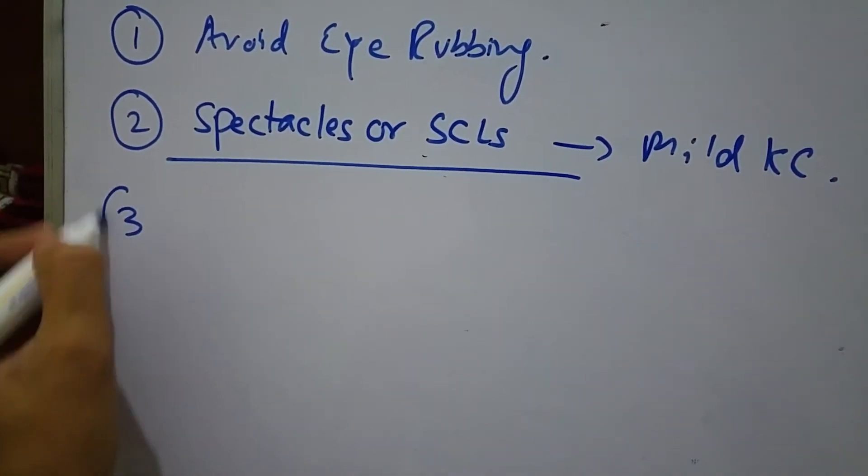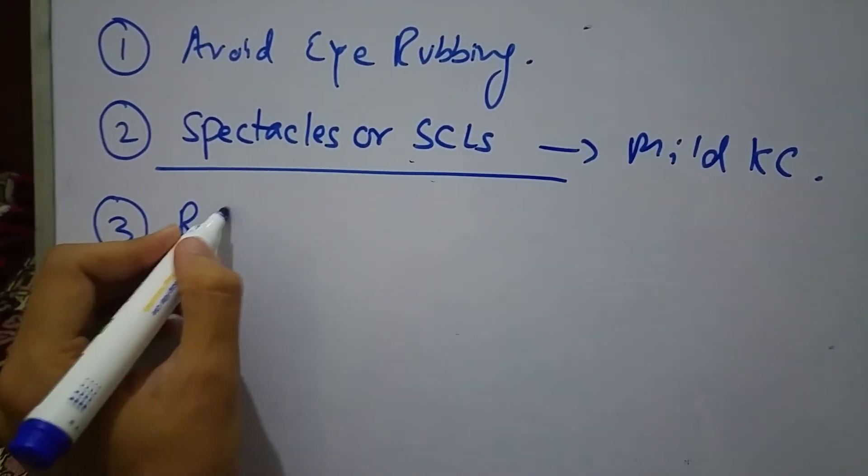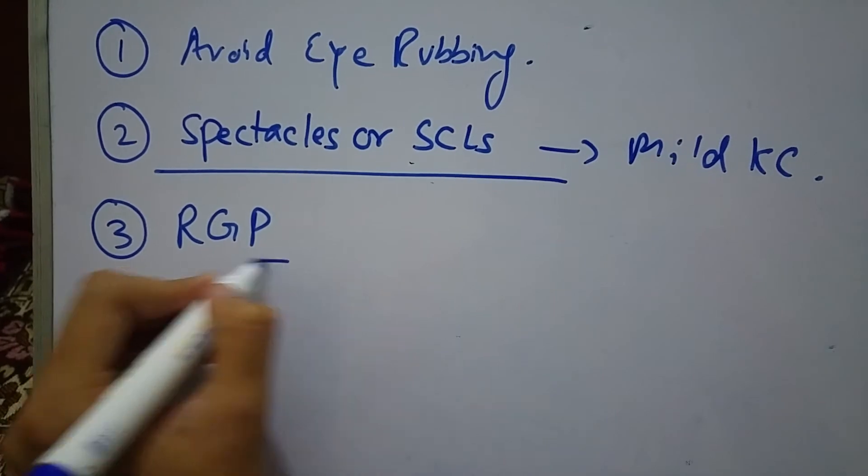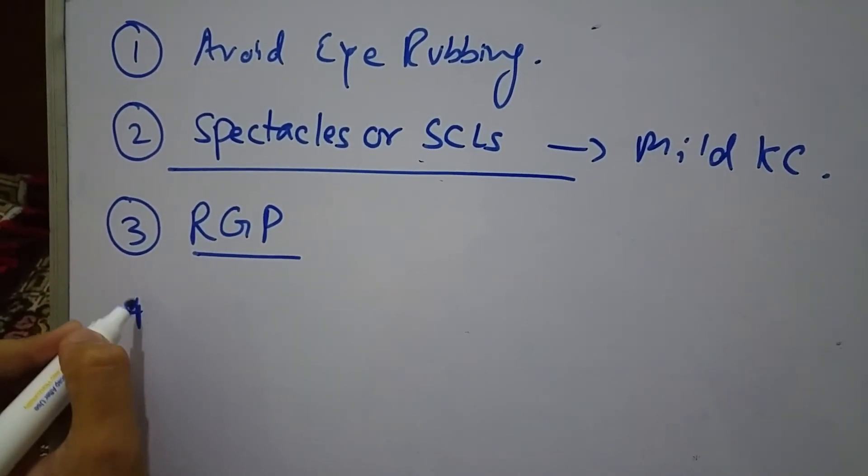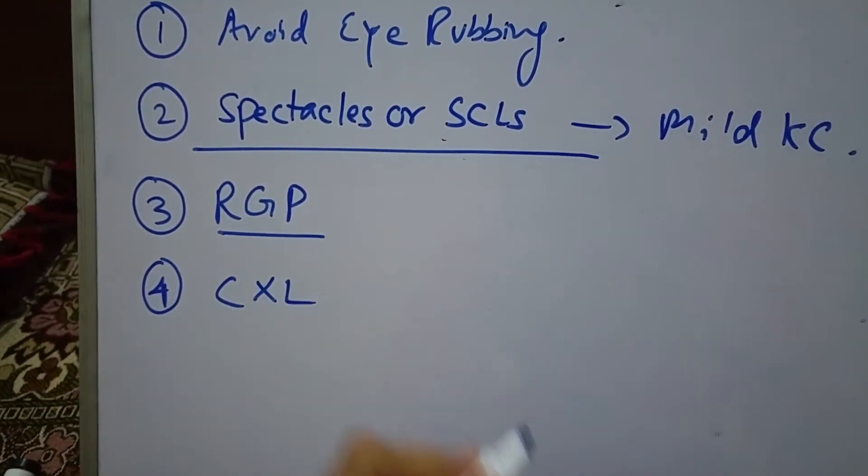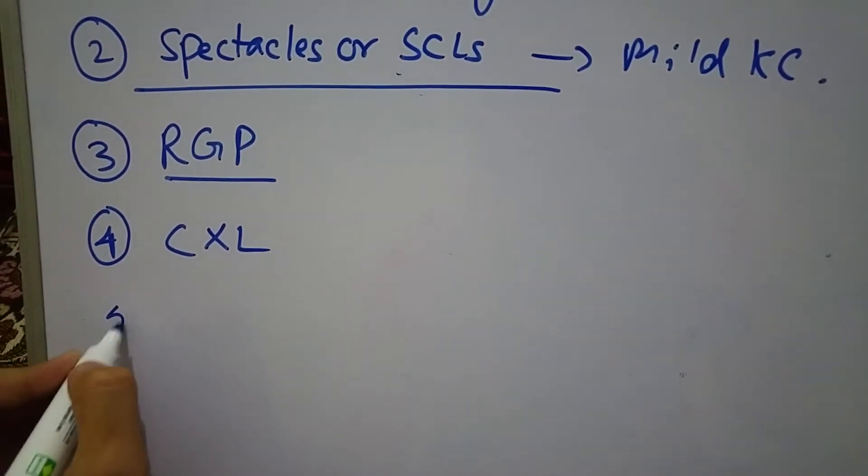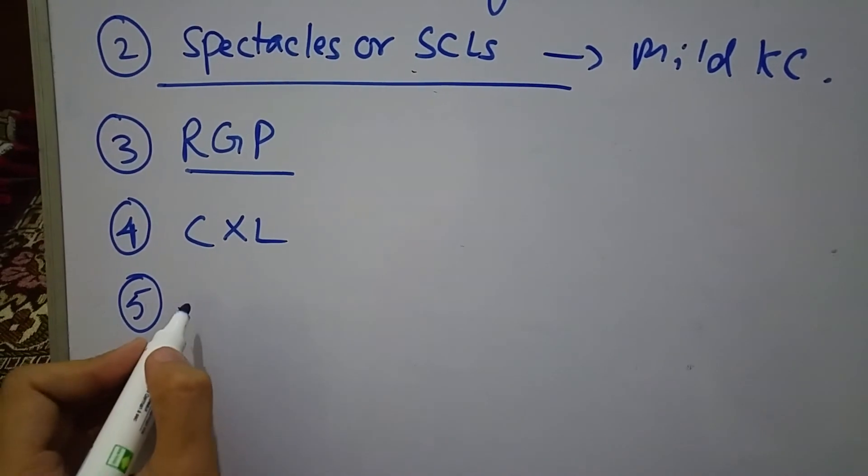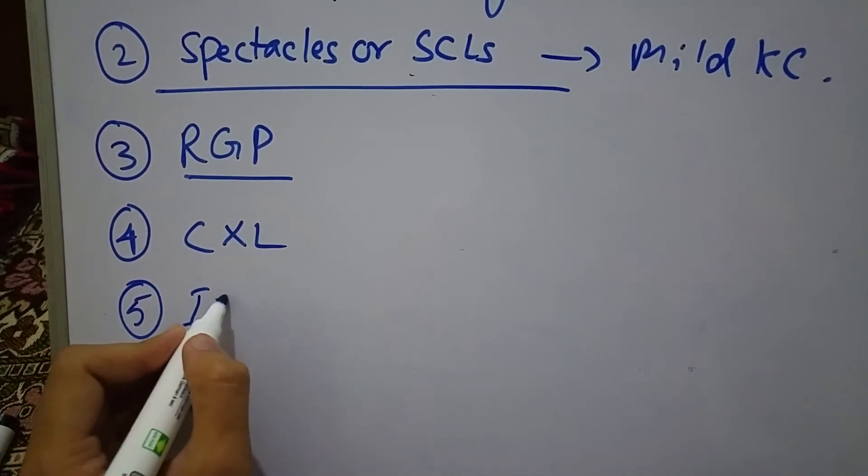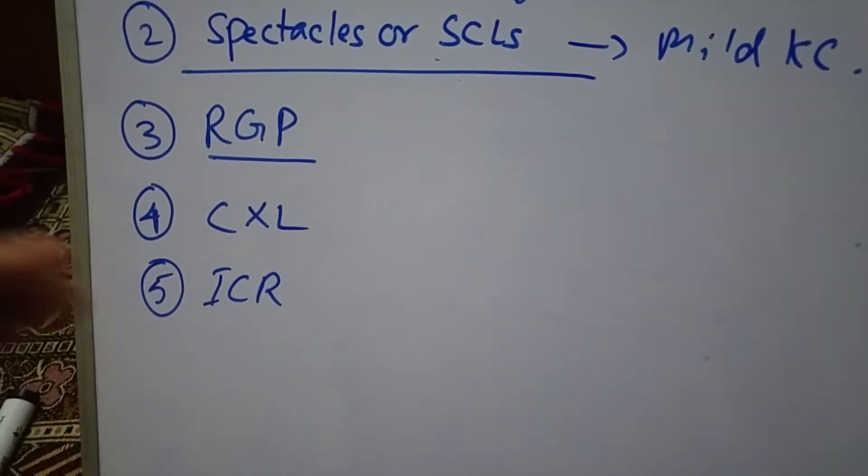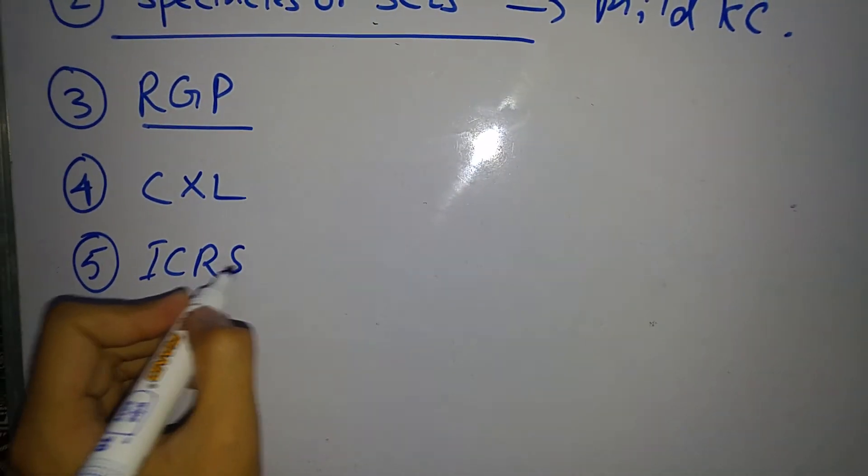And number three is rigid gas permeable lenses. Number four is CXL, or also known as corneal crosslinking. Number five is intracorneal ring segment implantation.